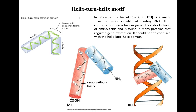The first type of motif we will talk about is the helix-turn-helix motif. It's a major structural motif which can bind to the DNA, and it is basically composed of two alpha helices. This is one alpha helix and this is the second alpha helix — this is the C-terminal and this is the N-terminal of the helices. These two helices are connected to each other via a short strand of amino acids which keeps them together.